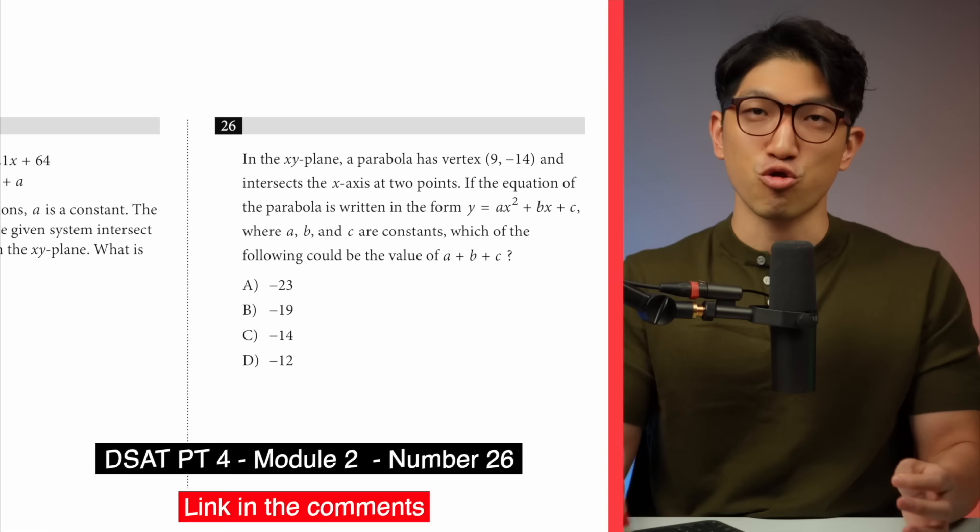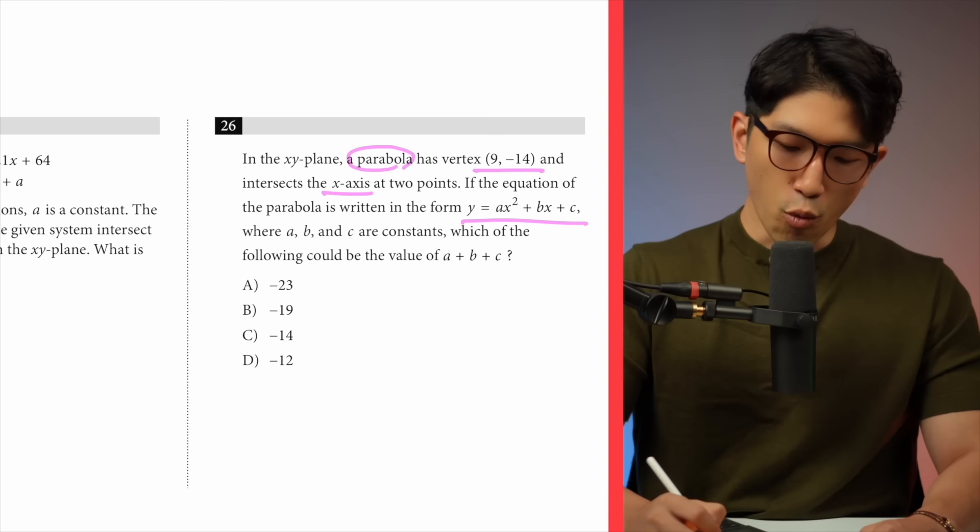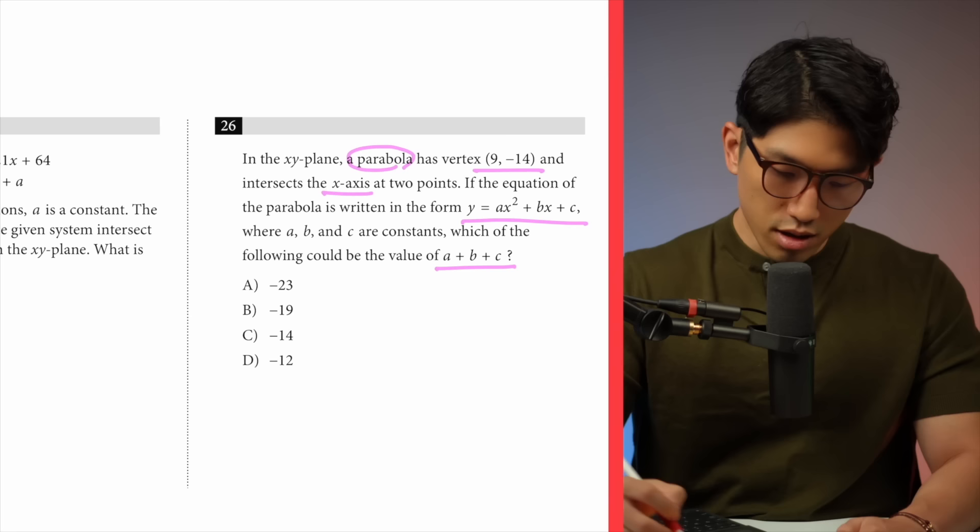The question says: in the x-y plane, a parabola has a vertex at this location and intersects the x-axis at two points. If the equation of the parabola is written in the form shown, where a, b, and c are constants, which of the following could be the value of a plus b plus c? So our vertex is located at (9, -14), so it's going to be about there.